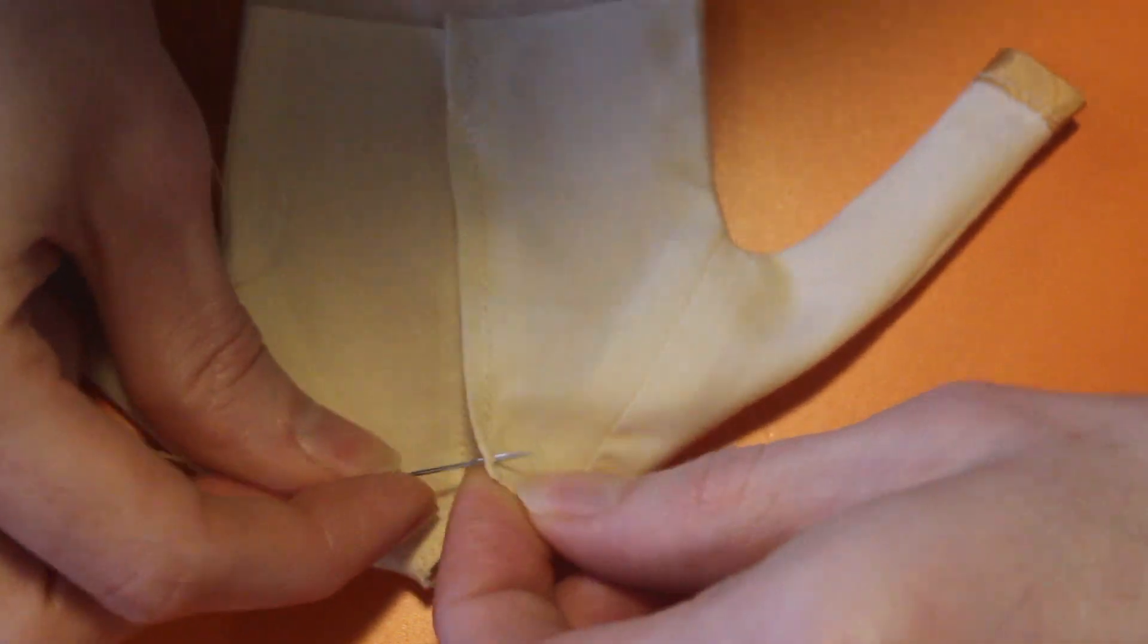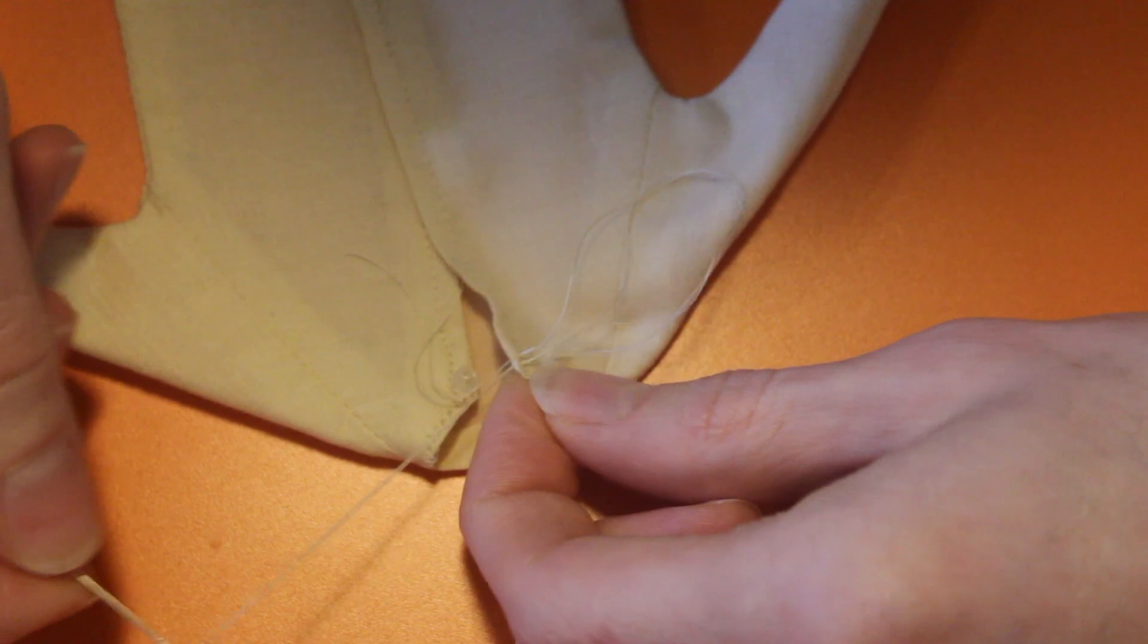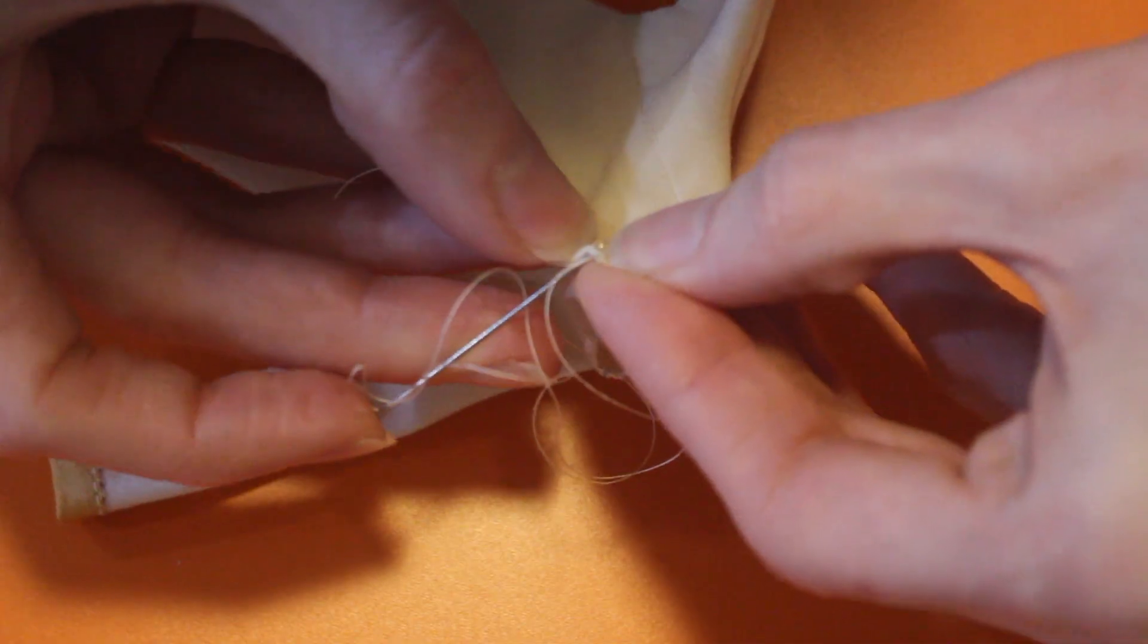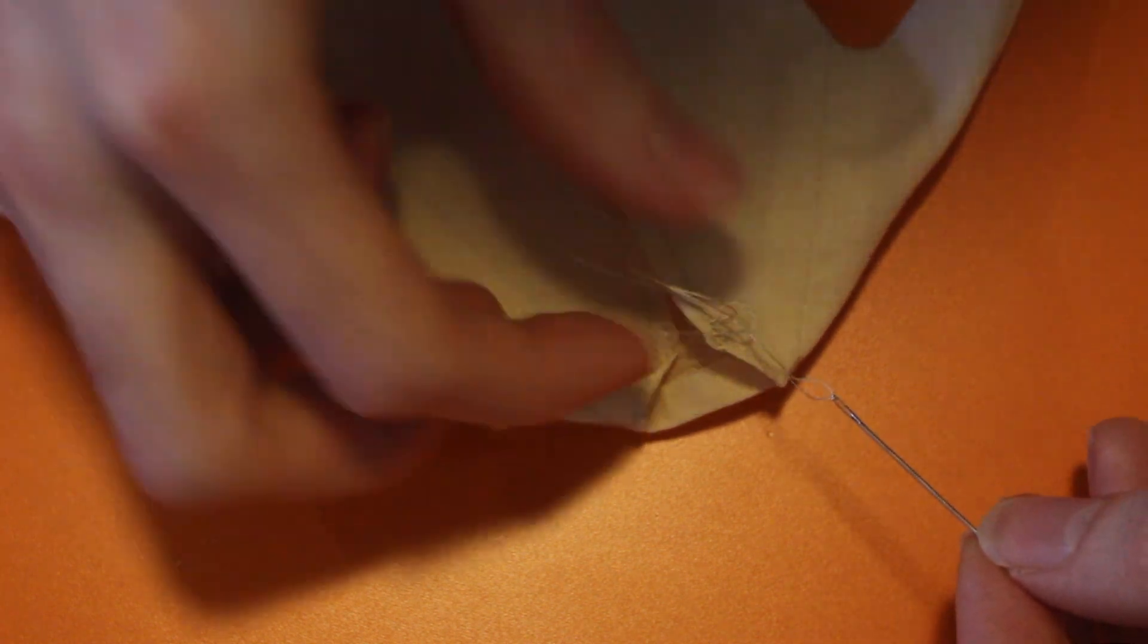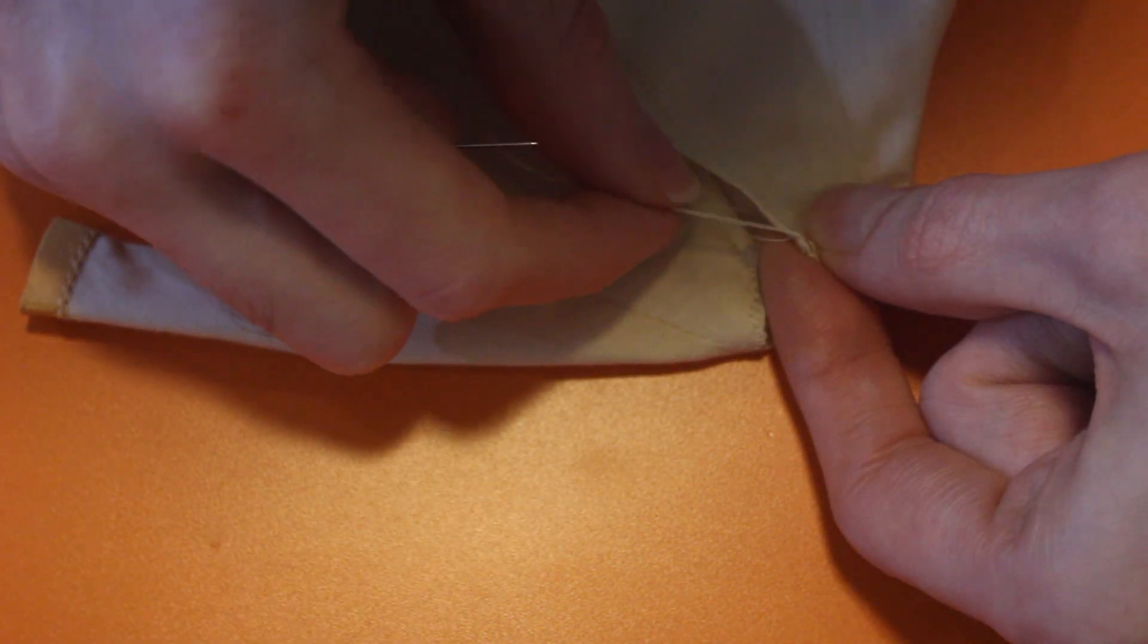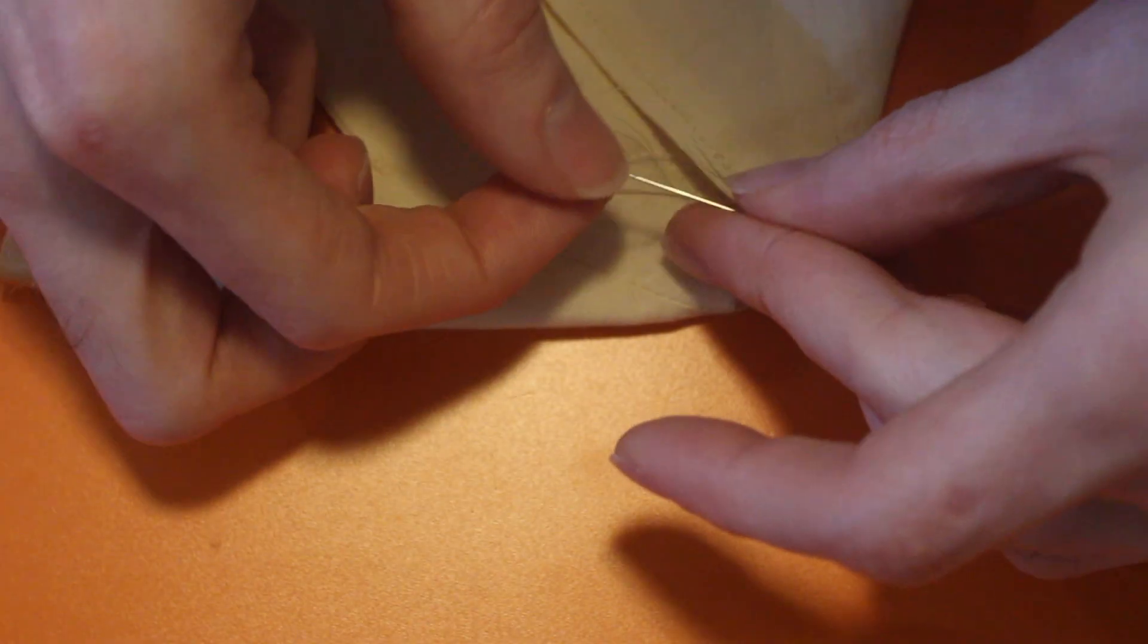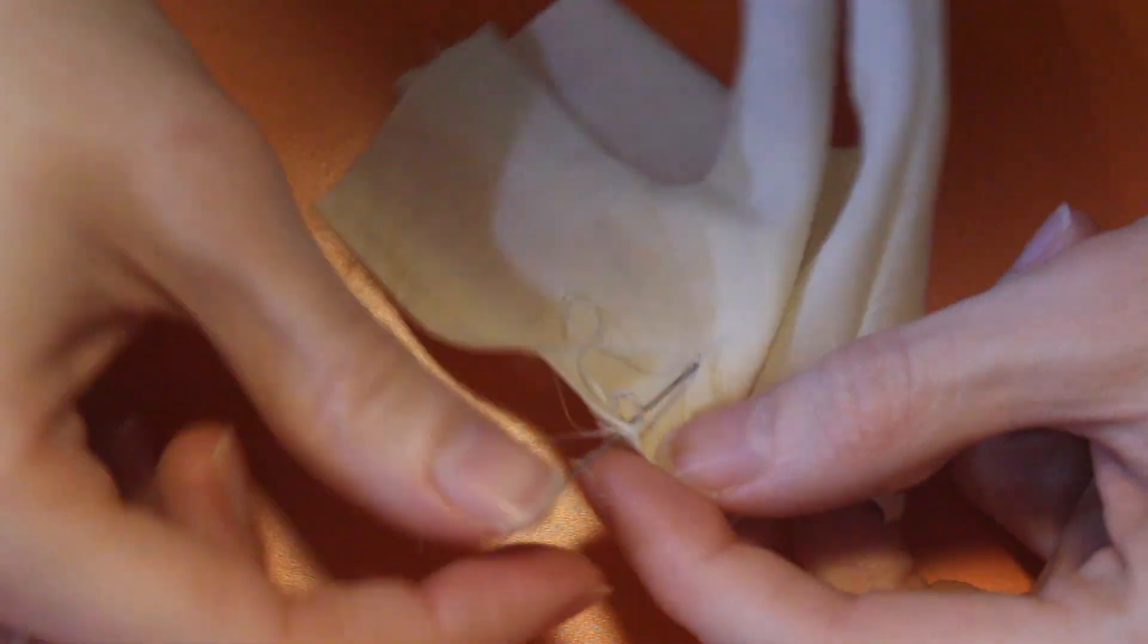Now I'm going to create the thread chain loop. First I'm bringing my thread through from the back and then back down just a few millimeters away. I am just going to roughly gauge how large the loop needs to be. Then, just a few threads away, I am bringing the thread back up. I will now start to create the chain by threading the loop and coming back through to create a knot. Then I create another knot, making sure it sits just in front of the previous knot. I keep doing this until the whole loop is knotted. And voila! I then bring the thread back down and seal it with a double knot.